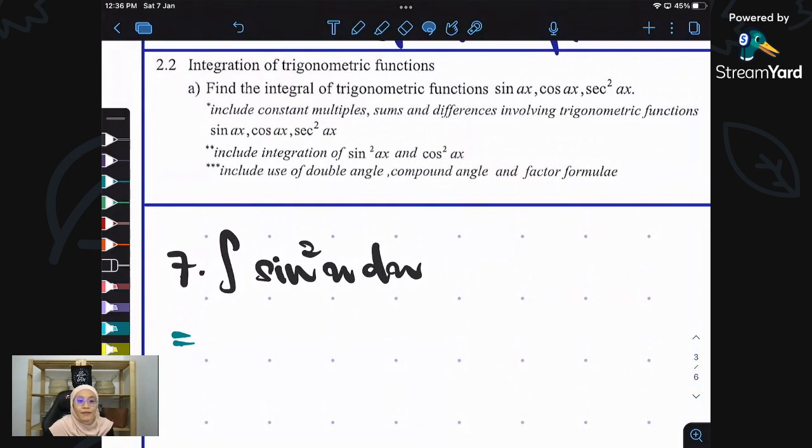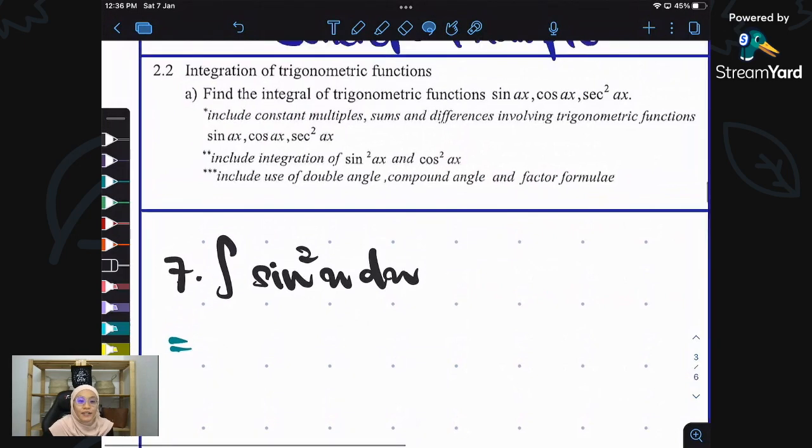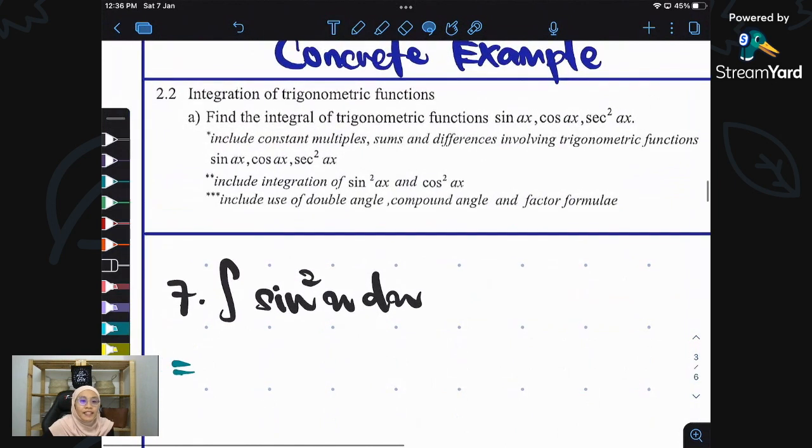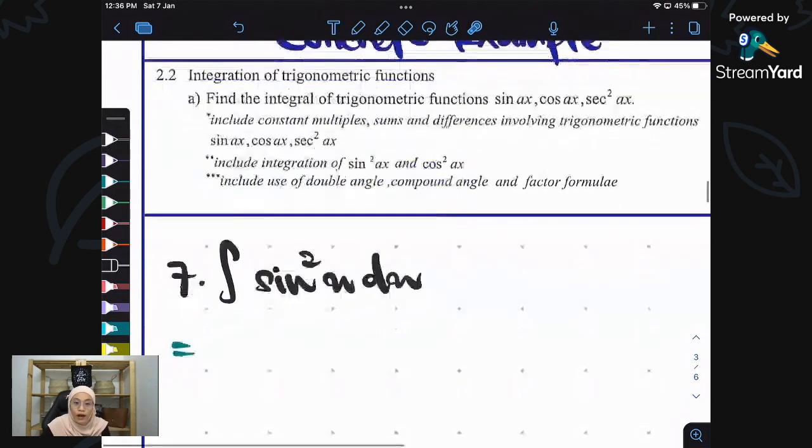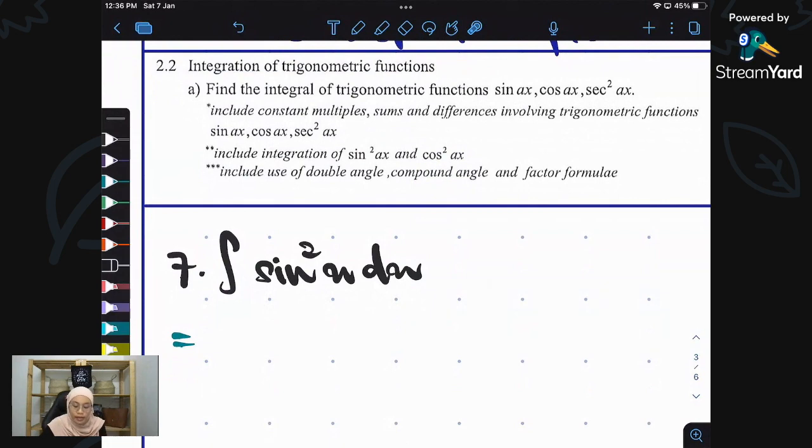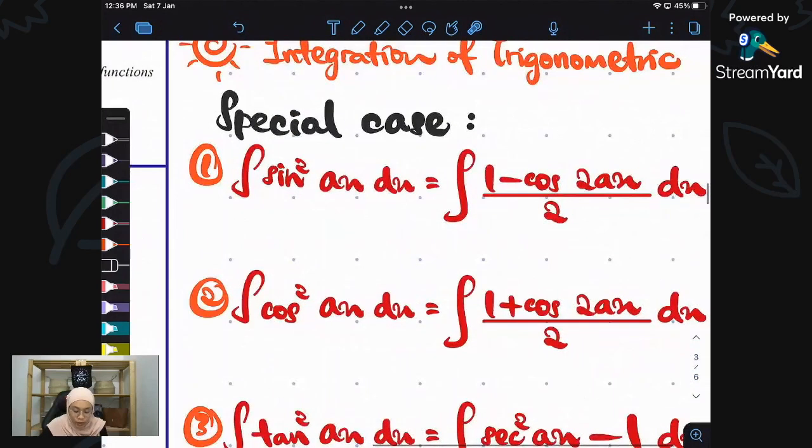Hello everyone, Assalamualaikum. So now we are going to discuss the next example which is the integration of sine squared. This is a bit special because it has squared and also cos squared AX. So how to solve this kind of questions? We have a formula for it which is we call it a special case.